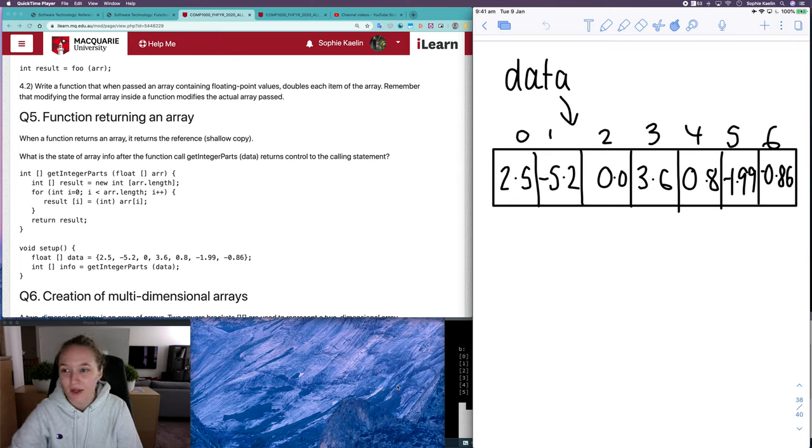In this video I'm going to be going over question 5 from the compound data 2 workshop. So in this question we're having a look at what happens when you pass arrays into functions and I'm going to trace that using a memory diagram that I have here over on the left.